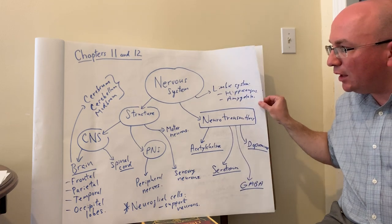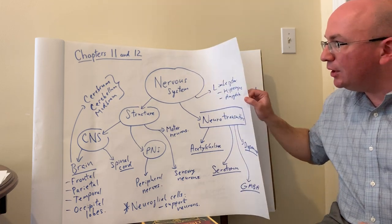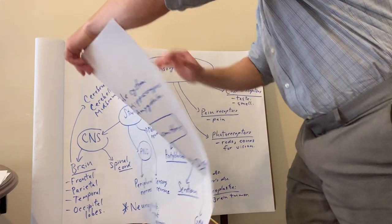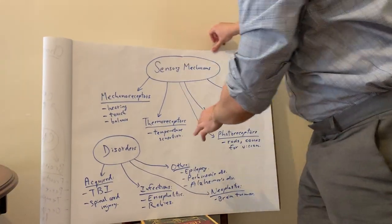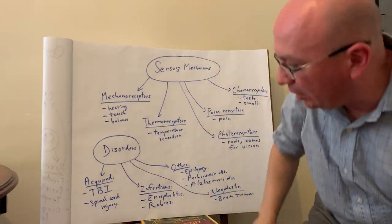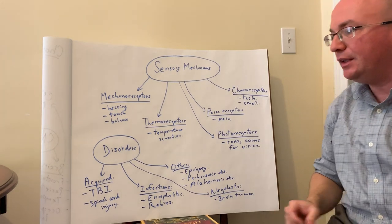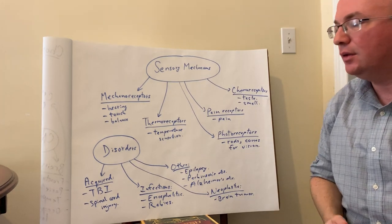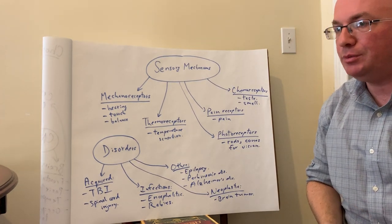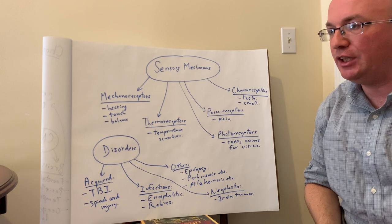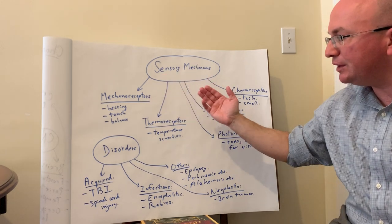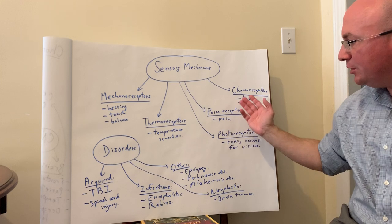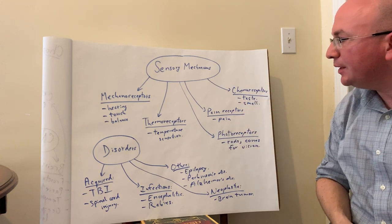For the next chapter, Chapter 12 on sensory mechanisms, we're going to talk about what kinds of receptors are found throughout the body that help with transmission of sensation through the sensory neurons. We have mechanoreceptors, thermoreceptors, photoreceptors, pain receptors, and chemoreceptors.